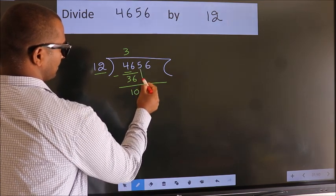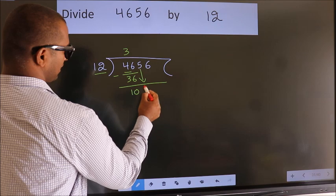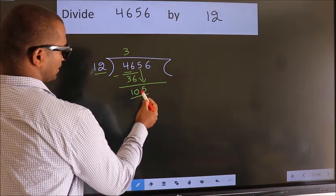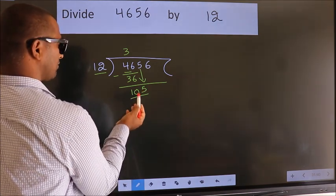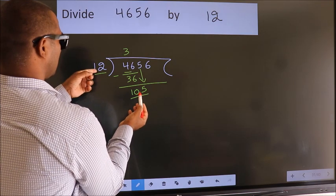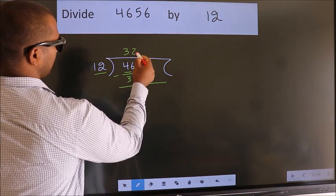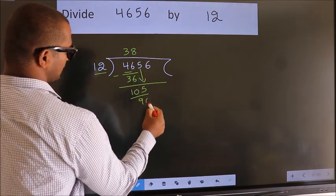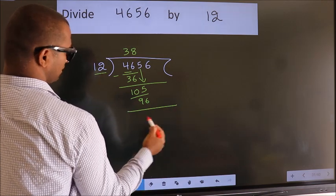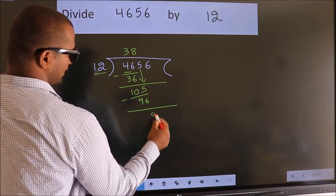After this, bring down the beside number. So 5 down. 105. A number close to 105 in the 12 table is 12 eights, 96. Now we subtract. We get 9.